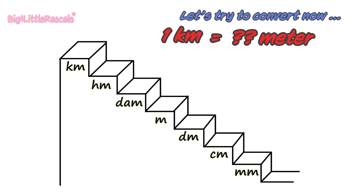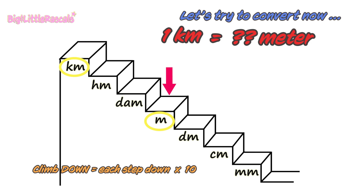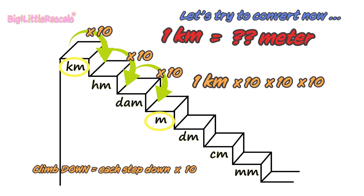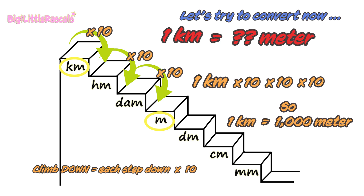Let's try to convert now. One kilometer equals to how many meters? First, find where kilometer is. There it is. Then find the meter. You need to jump down from kilometer to meter. Remember the formula? As you are climbing down, each step you jump down, you multiply by 10. One, two, and three jumps. So, one kilometer multiplied by 10, by 10, and by 10 — one kilometer equals to 1,000 meters. Easy, right?